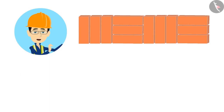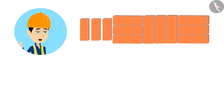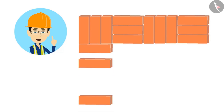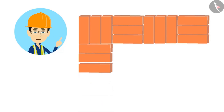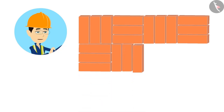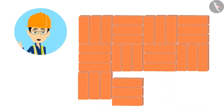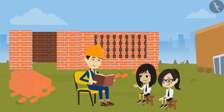Now let's make the line below it. Because the top line has started with vertical bricks, this line will start with horizontal bricks, then followed by vertical bricks and then horizontal bricks. In this way, we make a complete pattern.